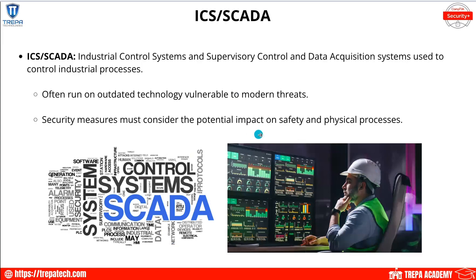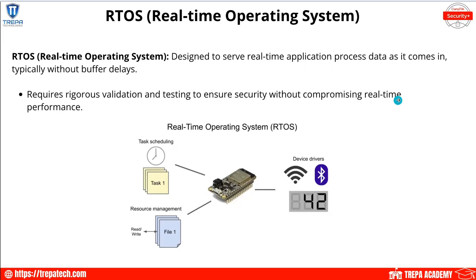ICS and SCADA — Industrial Control Systems and Supervisory Control and Data Acquisition systems — are used to control industrial processes and factories. From a security perspective, these systems often run on outdated technology because if a factory system is working, you want full uptime, and end-of-life lifecycle replacement is difficult to manage. Security measures must consider potential impact on physical safety and processes. At a base level, ICS and SCADA describe manufacturing and industrial control environments.